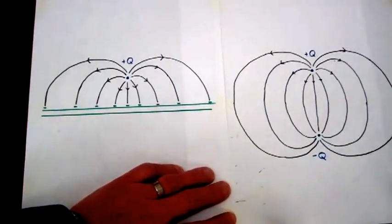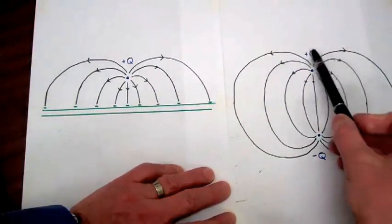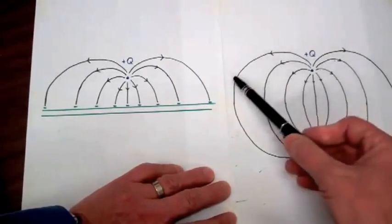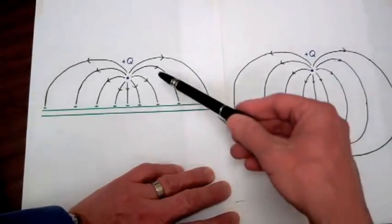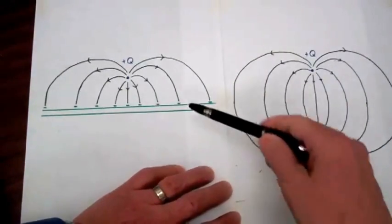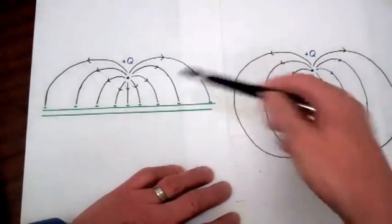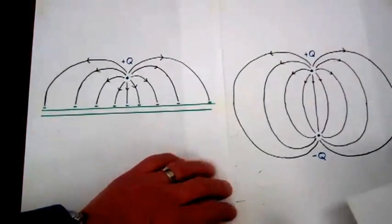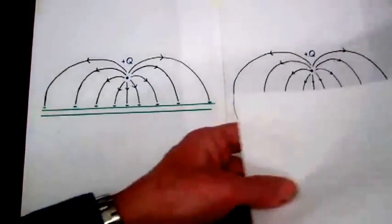We'll show that the solution for the electric fields in the top half is identical to the solution you would get for the single charge above the grounded plane.